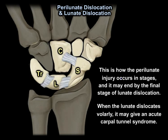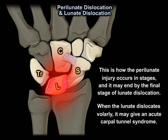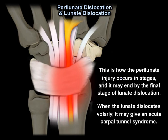This is how the perilunate injury occurs in stages, and it may end with the final stage of lunate dislocation. When the lunate dislocates volarly, it may cause an acute carpal tunnel syndrome.